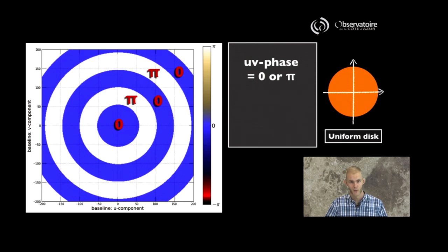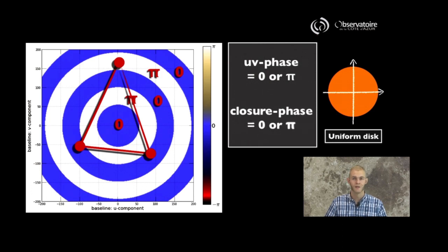What we do get access to, however, is what we've presented as the closure phase. If you were, despite the fact that we have the atmosphere, if we were able to sample the UV phase in three different places, and add it up so that the three pieces of phase information form a closing triangle along the original pupil or array, then we are able to form a meaningful quantity that we've called the closure phase.